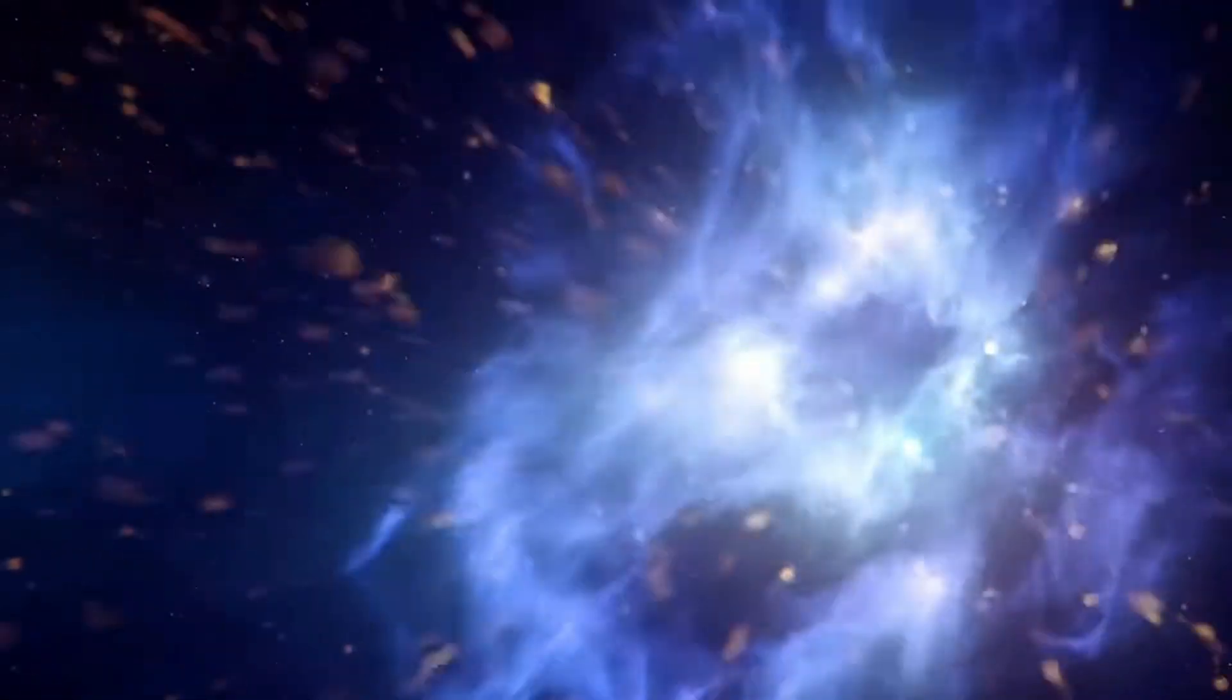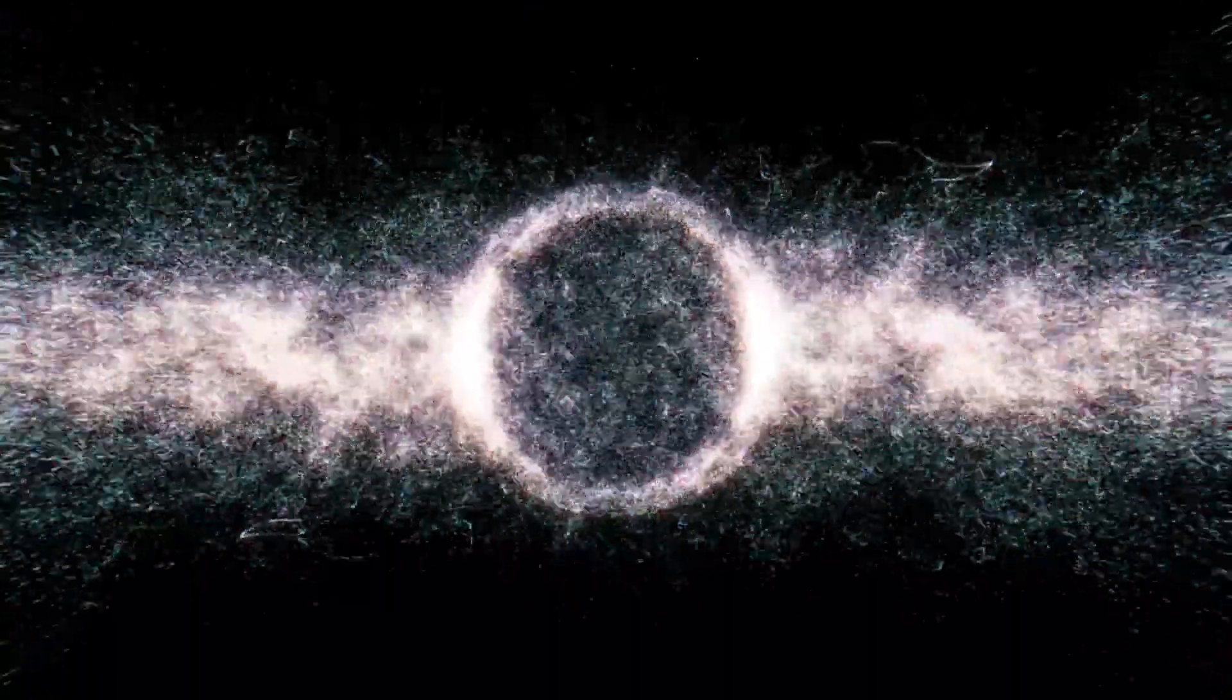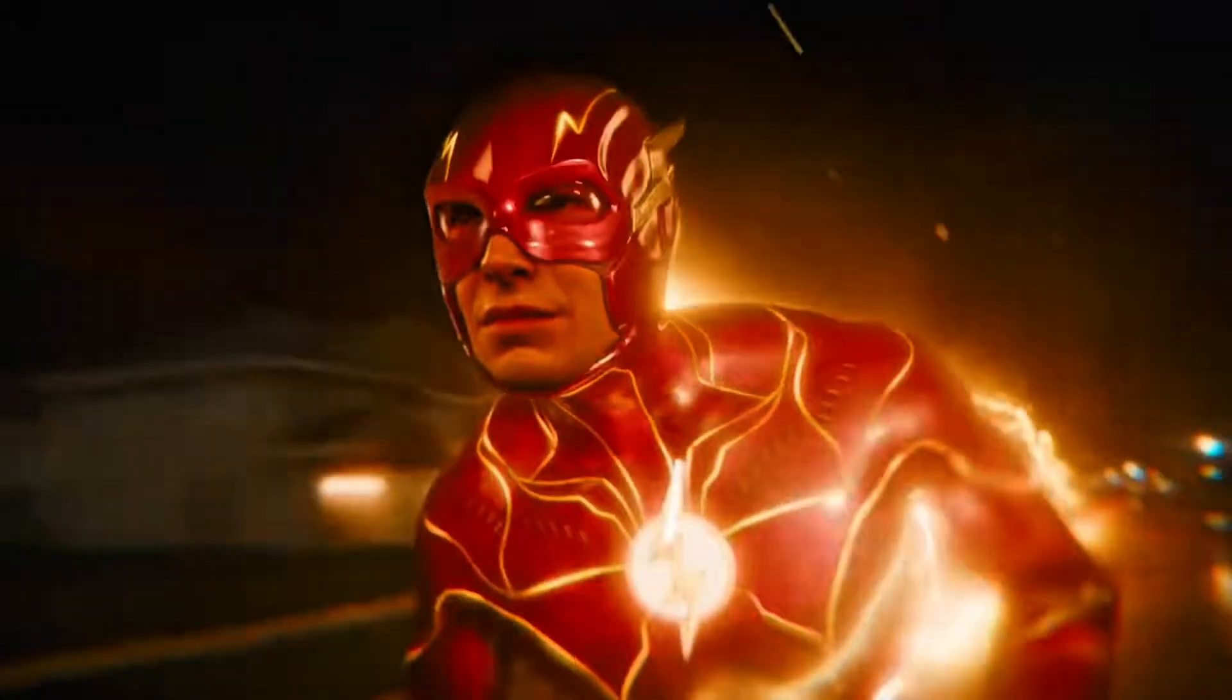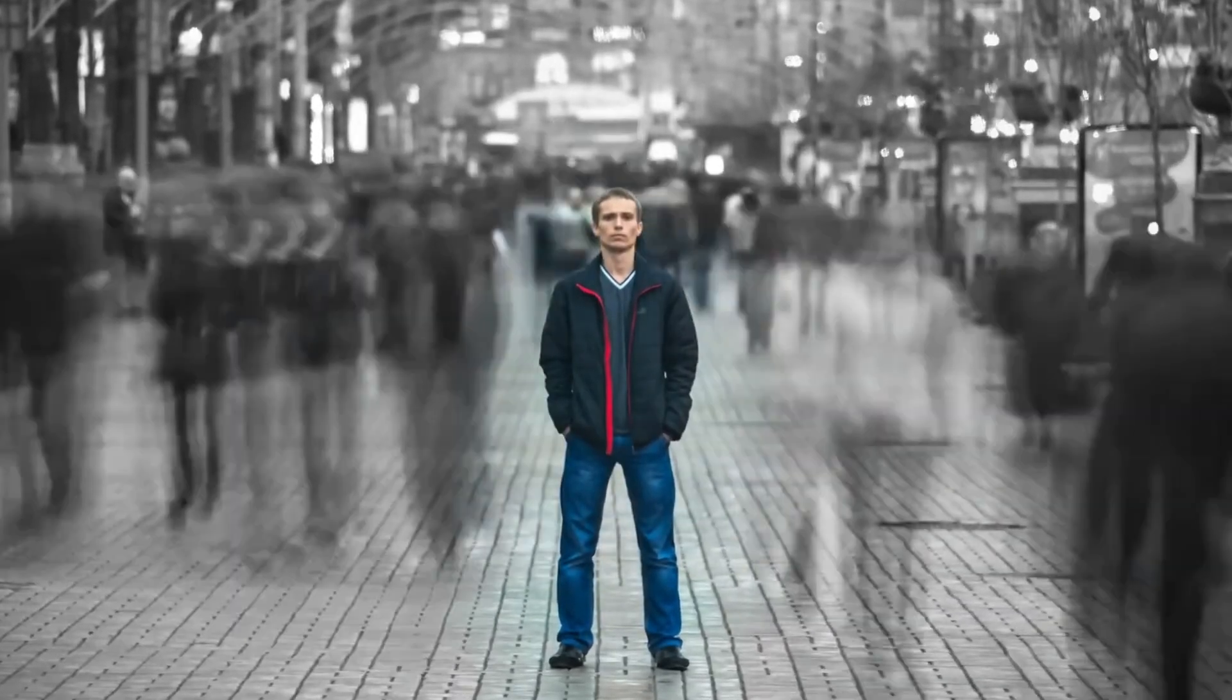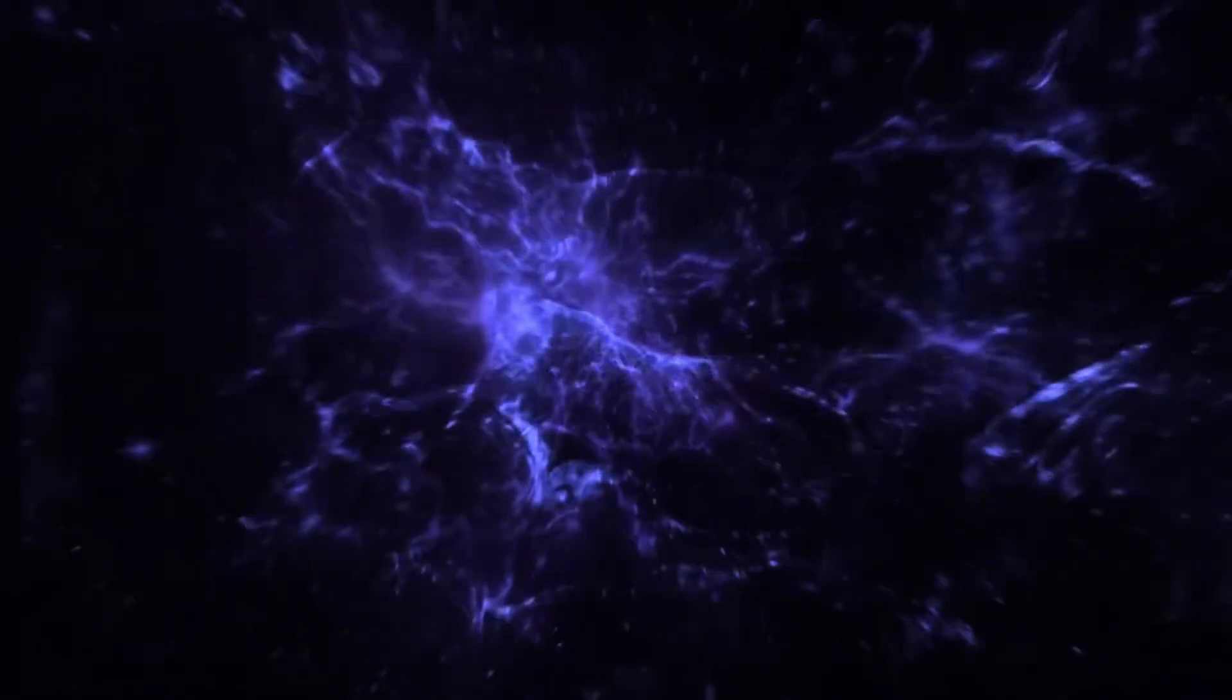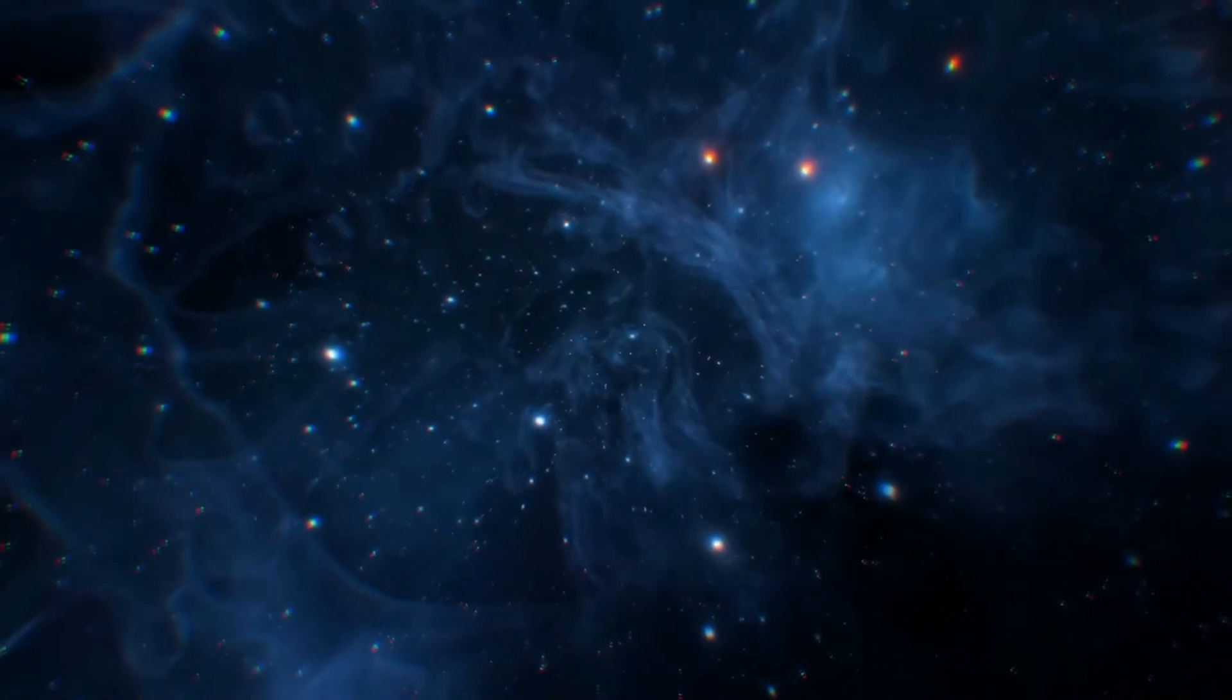Uncertainty principle: You can't know everything about a particle. If you know where it is, you can't know how fast it's going. If you know how fast, you lose its location. This is Heisenberg's uncertainty principle. It's not a problem with our tools. This is just how nature works.